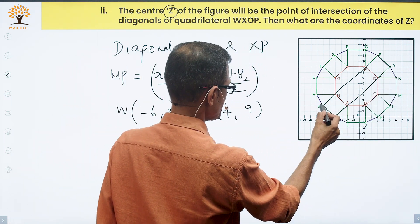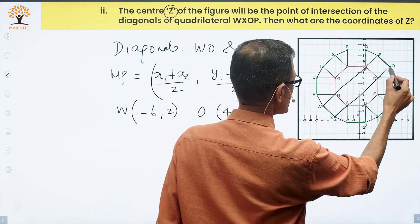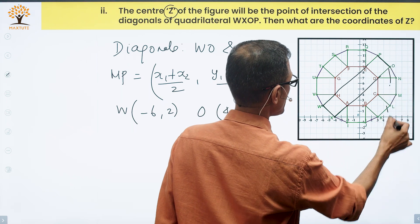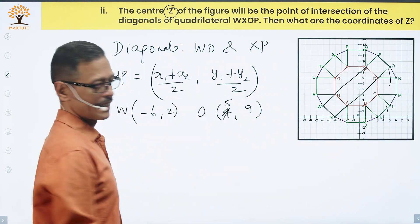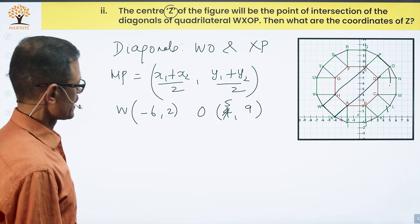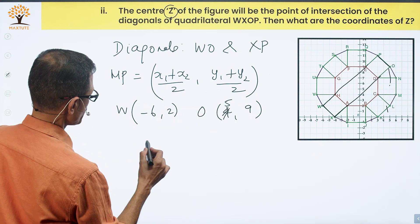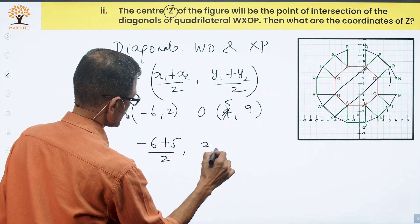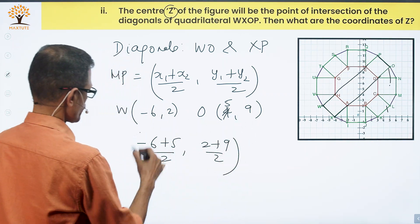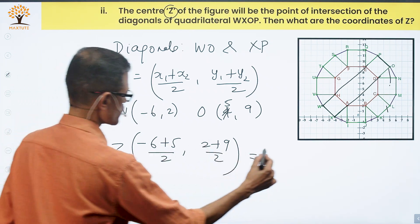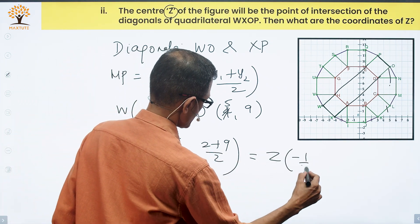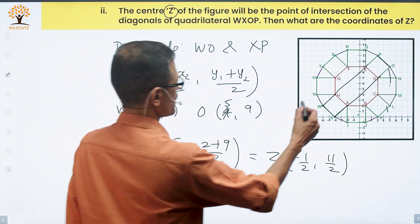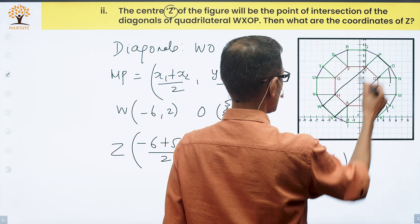The midpoint formula is (X1 plus X2 by 2, Y1 plus Y2 by 2). I'll pick coordinates of W and O. W coordinates are minus 6, 2. O coordinates are - let me check - 5 and 9. So X1 plus X2 by 2 is minus 6 plus 5 divided by 2, comma 2 plus 9 divided by 2. The coordinates of point Z are essentially minus 1 by 2, comma 11 by 2. These are the coordinates of Z, the midpoint of WO and XP.